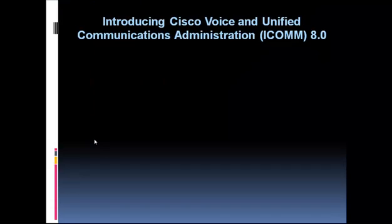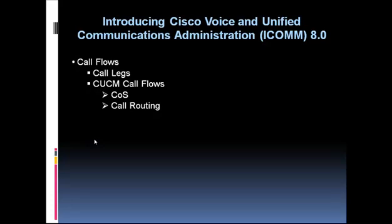Next, students learn about call flows. For example, a call coming in via an analog phone, traversing an IP network to another router connected to another analog phone, represents four different call legs — each router has an inbound call leg and an outbound call leg. When IP phones and Communications Manager or CUCME are involved, the call flow may need to touch a call agent. These call flows require a signaling protocol: it might be SCCP (Skinny Client Control Protocol), SIP, H.323, or MGCP.